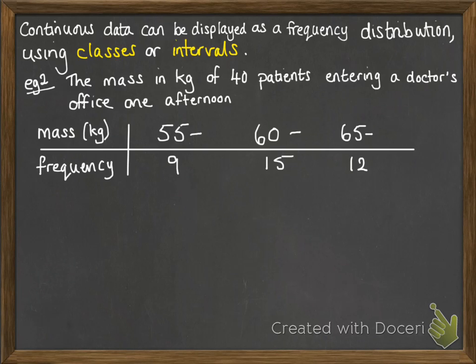Fifty-five upwards, sixty upwards, sixty-five upwards. You might be given the bottom and the top boundary there, so it might have said fifty-five to fifty-nine, sixty to sixty-four. You can be given this in a variety of ways. You just need to be able to read those tables.